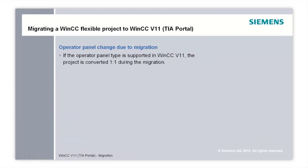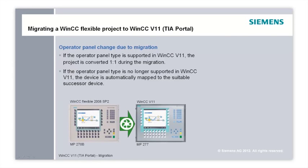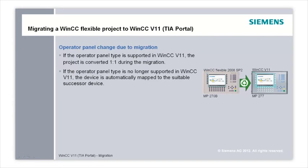What happens to an operator panel during migration? If the operator panel type in the WinCC flexible project is also supported in WinCC version 11, the project is converted one-to-one during the migration. If the type of the operator panel to be migrated is no longer supported in WinCC version 11, the device is automatically mapped to the suitable successor device. In the displayed example, the MP270B is migrated to the MP277 Key. WinCC version 11 also supports you regarding settings such as screen resolution or arrangement and size of the elements on the display.